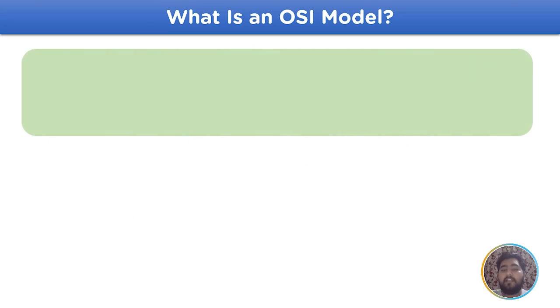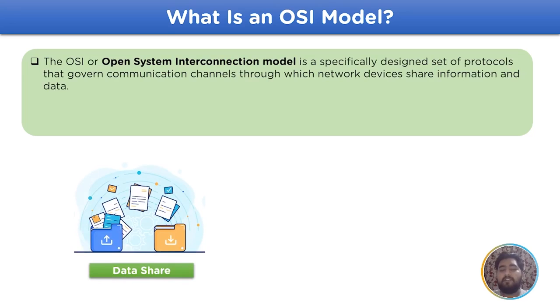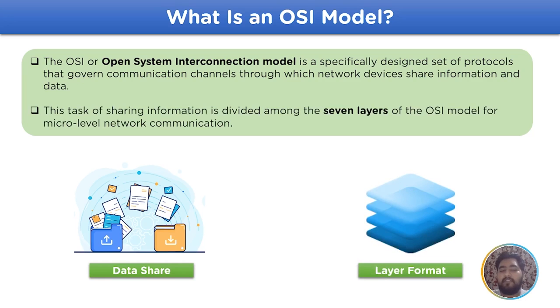Now, let's take a look at the technical definition of the OSI model. The OSI model stands for Open System Interconnection Model, a specifically designed set of protocols and standards governing the data's modeling and conversion of proper transmission. The OSI model is divided into seven layers which perform specific functions and apply protocols to maintain data quality without any error.